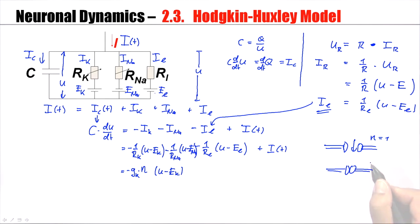However, sometimes the channel is closed. And this is represented by activation variable N equals 0. If I multiply G times 0, the total conductance is 0. No current can flow through.